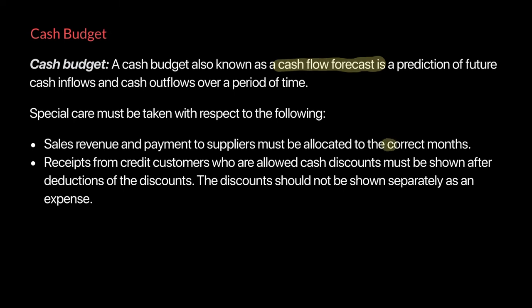There is a difference between sales made and sales receipts, and between purchases made and purchases payments. Sales made and purchases made refer to the month in which you sold or bought the good. But in the cash budget, our focus is on what month we received the sales receipt and in what month we made the purchases payment. Also, for any receipts we need to account for any cash discounts, as illustrated in previous videos. Similarly, there can be discounts on purchases payments received from suppliers, and the payment should be recorded after the discount.